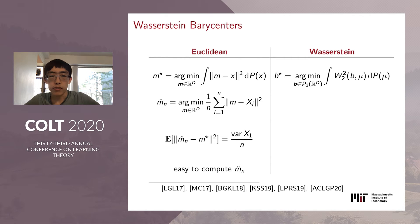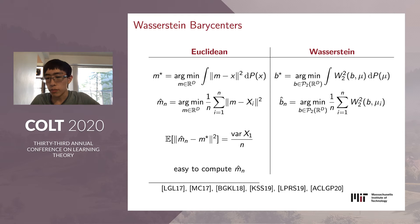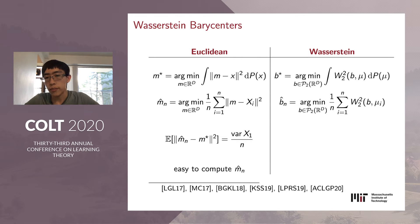In the Euclidean setting, we can also talk about a sample mean by replacing the distribution p with an average over samples drawn iid from p. Analogously, in the Wasserstein case, we have an empirical barycenter. The empirical barycenter is a natural estimator of the population Wasserstein barycenter, so it's natural to ask the statistical question of how well these empirical estimators approximate their population counterparts.